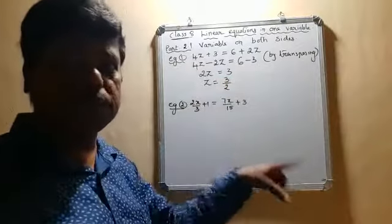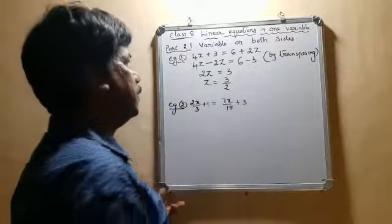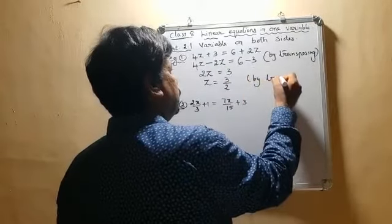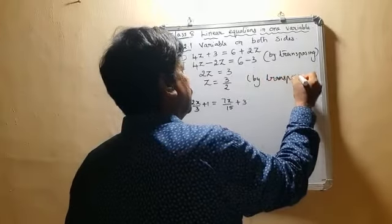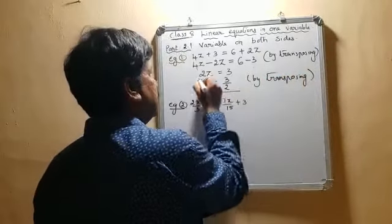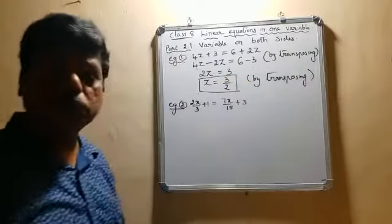As 2 is multiplied here, when it is sent to the other side, it becomes divided. This is by transposing again. So we have the answer. The final answer is z equals 3 by 2.